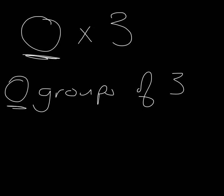Well, if we've got 0, in other words, we've got no groups of 3, we've got nothing at all. So 0 multiplied by anything will get us to 0.